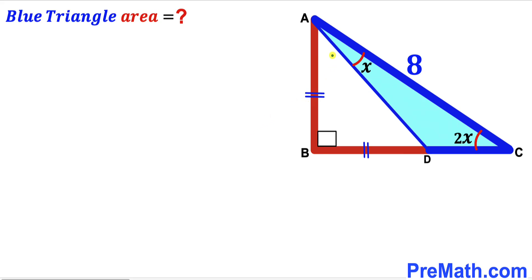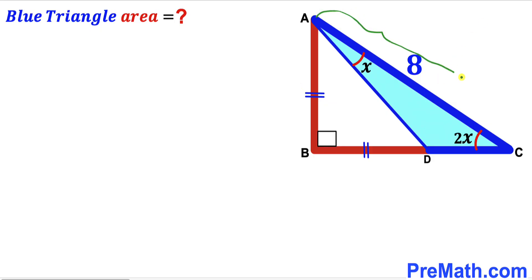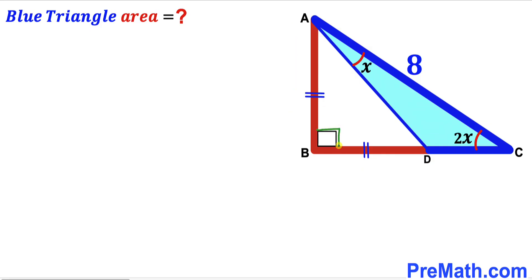Welcome to Pre-Math. In this video we have a big right triangle ABC that consists of two triangles: the isosceles triangle ABD and the blue shaded triangle ACD. Side AC is 8 units, angle DAC is represented by x, angle ACD is 2x, and side AB is equal to segment BD. This angle is 90 degrees.